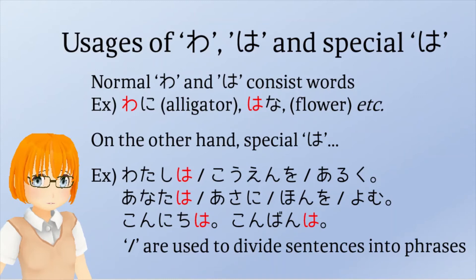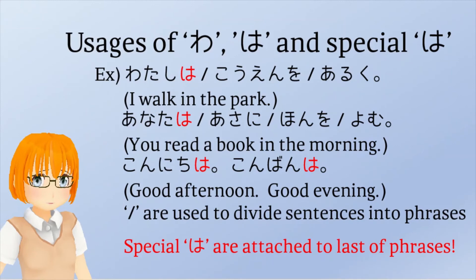In contrast, special は is contained only in sentences. Along with the former explanation, I extracted sentences from previous pages, then writing slashes in each sentence to divide into phrase by phrase. By writing slashes in sentences, we can understand their differences somewhat clearly. The special は appears at the end of phrases, the same as special お.